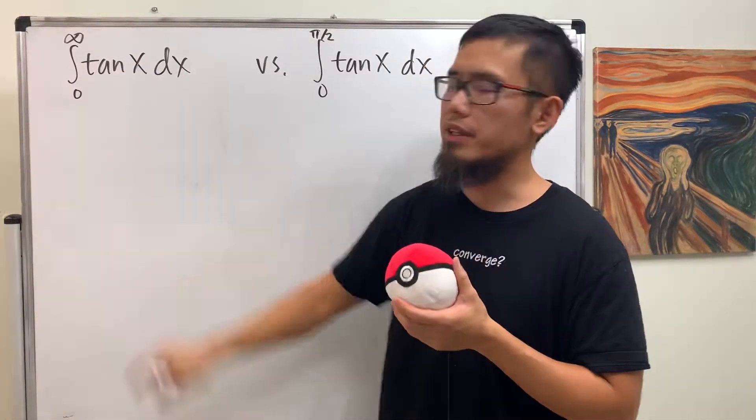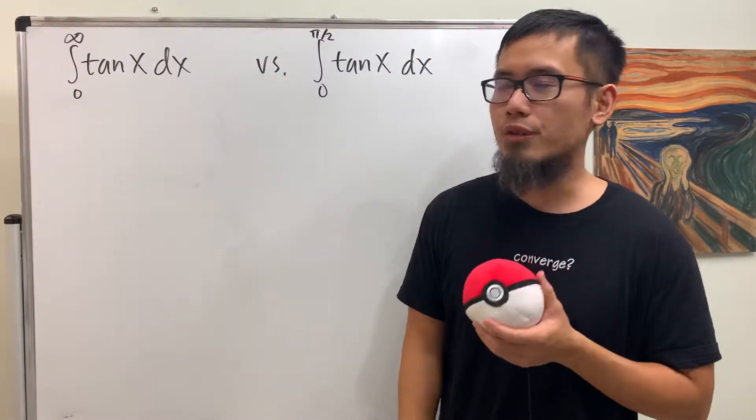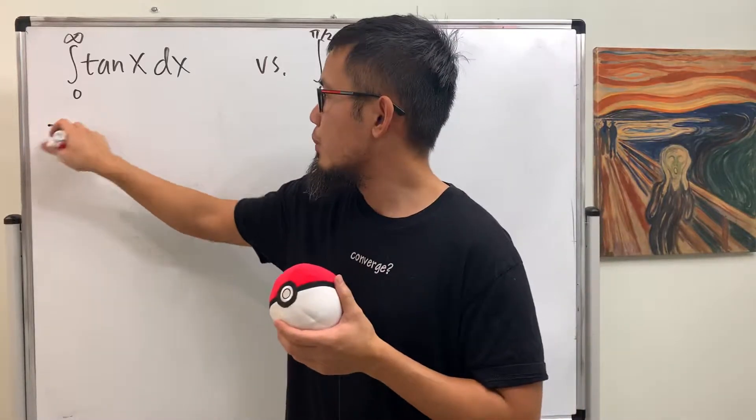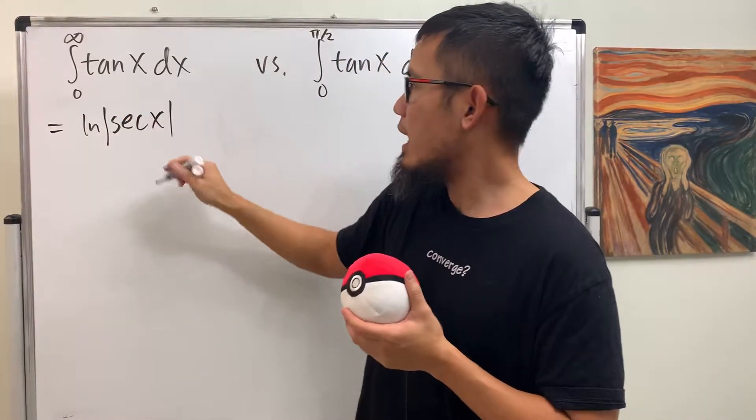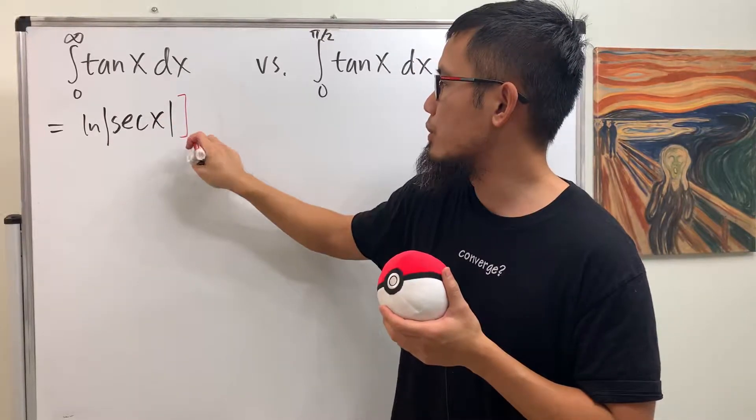To integrate tangent x from 0 to infinity, first, we know the standard result for the integral of tangent x, which is ln absolute value of secant x.